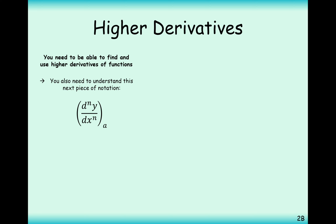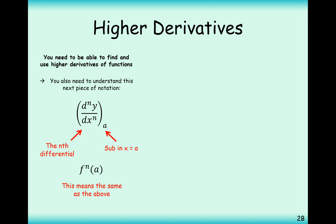You'll also need to understand the notation dⁿy/dxⁿ with a subscript of a, which means take the nth differential and then substitute the value a for x. Sometimes it will be written as x equals a, or just an a at the bottom. In function notation, f^(n)(a) means take the nth derivative of f and then substitute a.